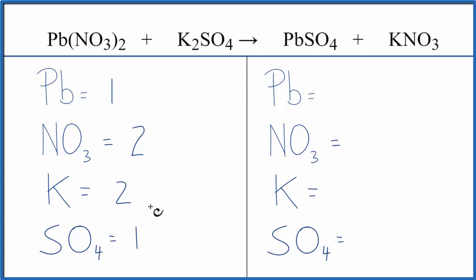This will make the balancing a lot easier. We have on the product side, one lead, one nitrate, one potassium, and one sulfate.